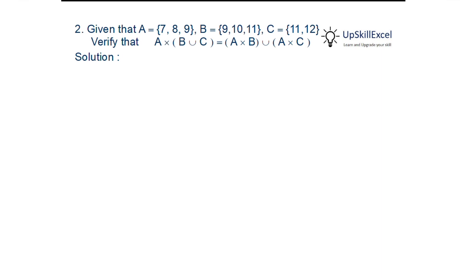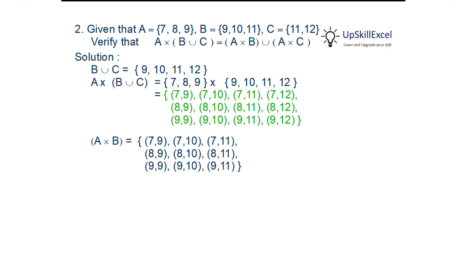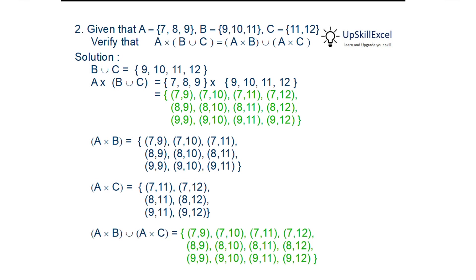Given 3 sets A, B and C, verify the identity A×(B∪C) = (A×B)∪(A×C). On the left-hand side, we find B∪C = {9, 10, 11, 12}, then take the product with A. As A has 3 elements and B∪C has 4 elements, we get 12 elements total. On the right-hand side, we find A×B, then A×C, and take their union. RHS equals LHS.